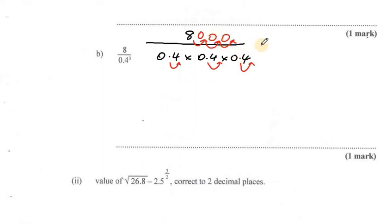So now I have 8,000 being divided by 4 times 4 times 4. Now dividing a quantity by 4 is the same thing as dividing that quantity by 2 twice.